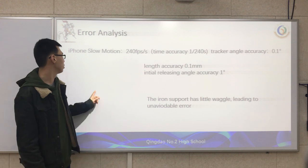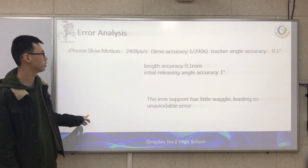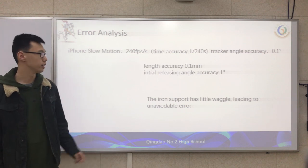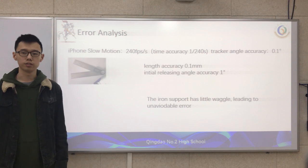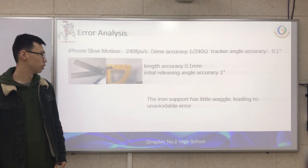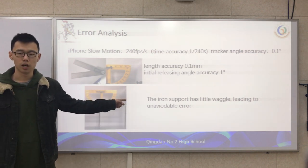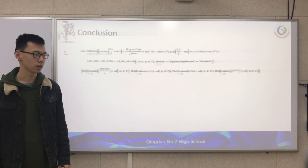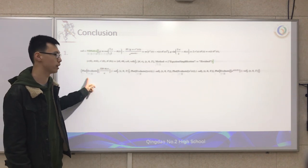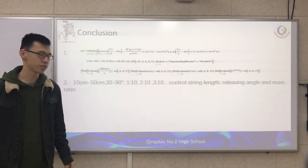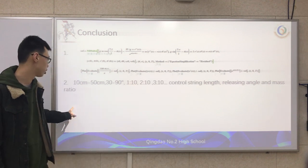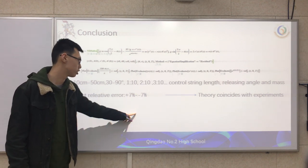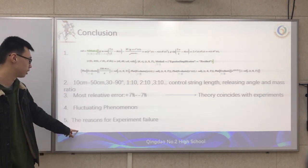In our experiment, we identified several sources of error. The camera operates at 240 frames per second, giving a time accuracy of 1/240 seconds. Tracker angle accuracy is 0.1 degrees. String length accuracy is 0.1 millimeters. Initial release angle accuracy is 1 degree. The rod also has a tilt angle during rotation, leading to unavoidable error. In conclusion, we used Mathematica integration to find the numerical answer of the equation. We changed the string length, release angle, and mass ratio in our experiments, and found that the relative error ranges from +7% to -7%, meaning our theoretical model coincides with our experiments. We also analyzed the fluctuation phenomenon and the reasons for experiment failure. Thanks for listening.